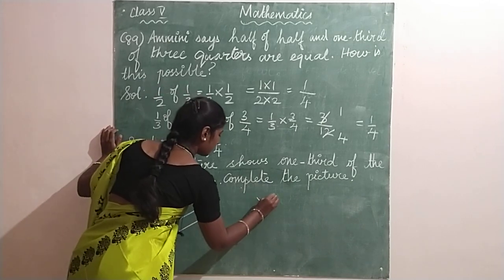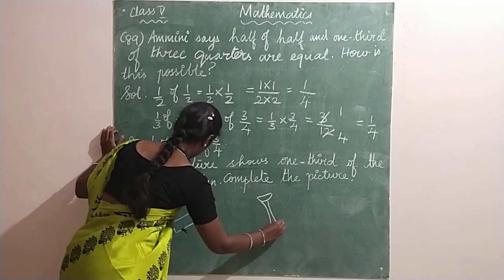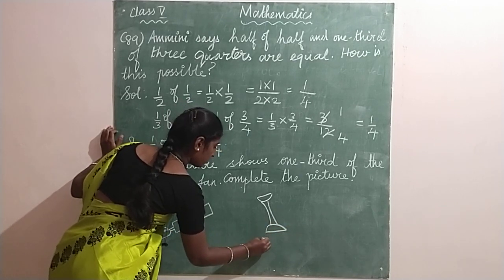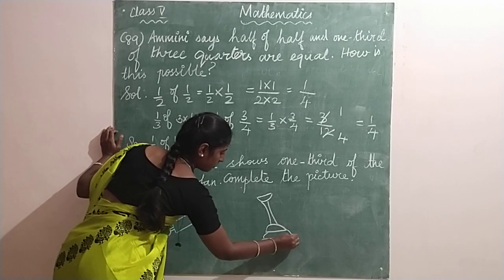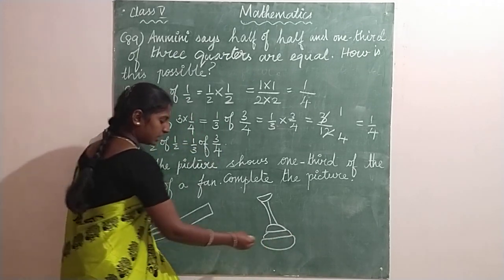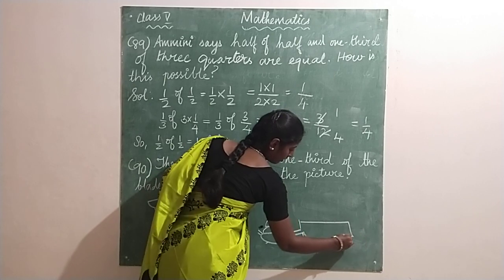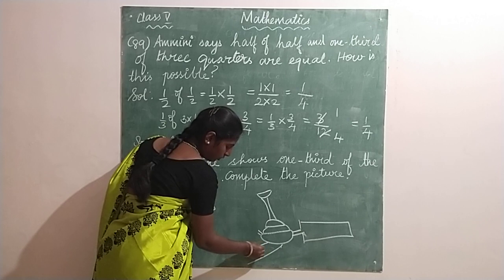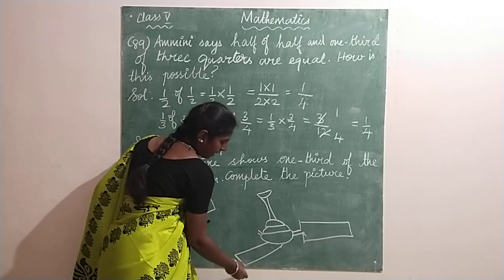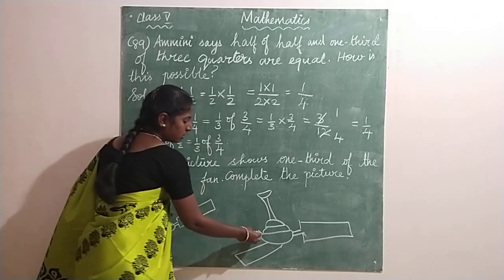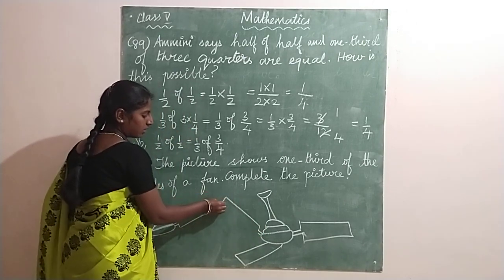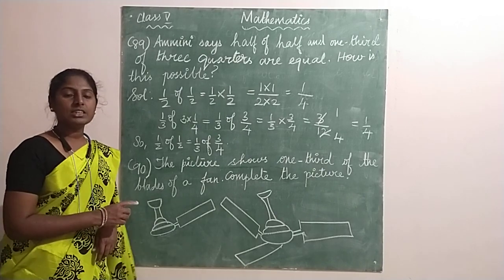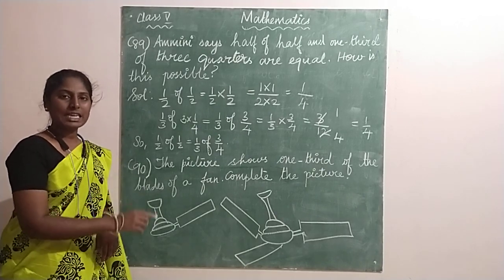So make the diagram as it is. Then you have one blade given here. One is already given here, so I have drawn it. And one more you have to draw. So two out of three you have drawn, and you have to draw the third one also. So these are the wings of the fan. So this is how you have to complete a diagram when part of the whole diagram is given.